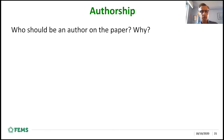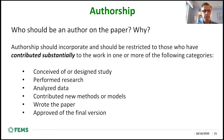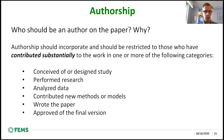Before you submit, it's important to determine authorship — who should be on the paper and why. Authorship should be restricted to those who have contributed substantially to the work in one or more of the following categories: conceived or designed the study, performed the research, analyzed data, contributed new methods or models, or wrote or edited the paper in substantial ways. And everybody who is an author needs to approve the final version before submission.